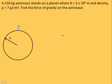Here's a problem where an astronaut's standing on a planet, and we're given the mass of the astronaut, radius of the planet, and this looks different - the density of the planet in grams per cubic centimeter. We want to find the force of gravity on the astronaut when he's on the surface.